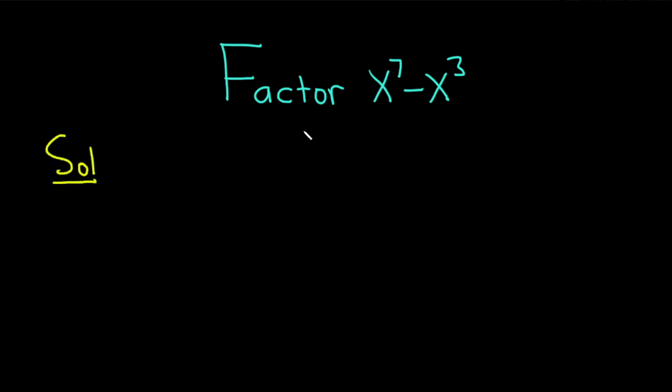Let's start by writing it down again. So we have x to the 7th power minus x to the 3rd power. Whenever you're factoring, you should always try to see if you have a common factor. In this case, the greatest common factor is x cubed.